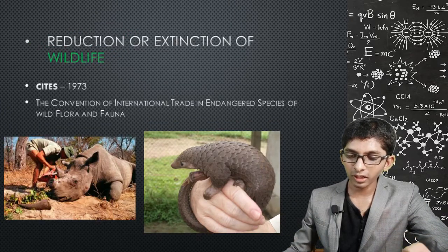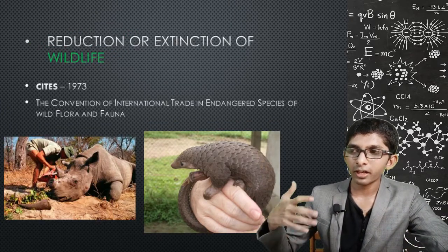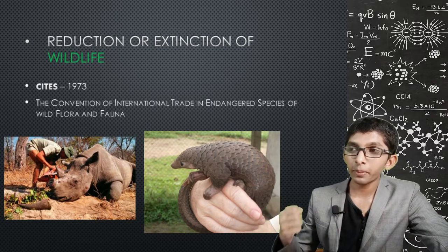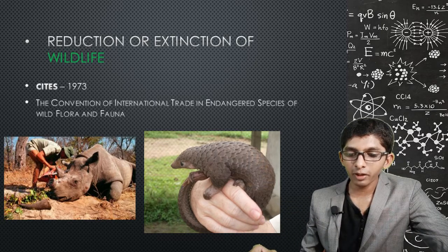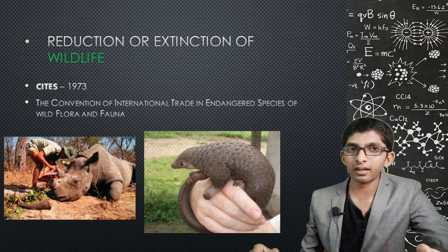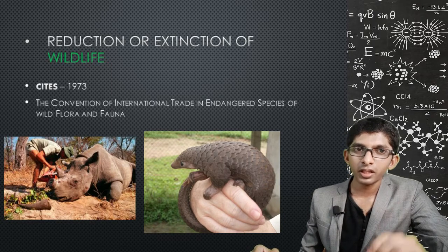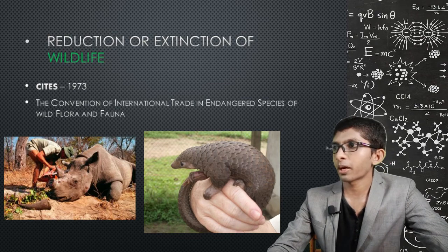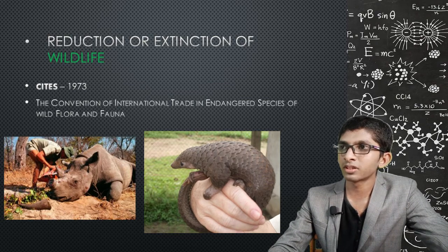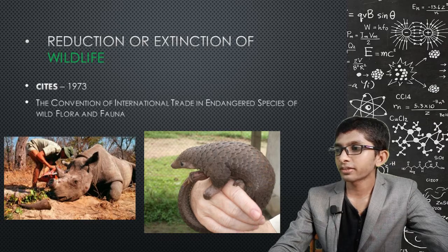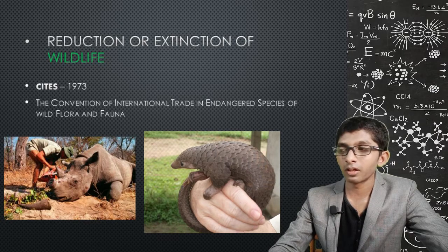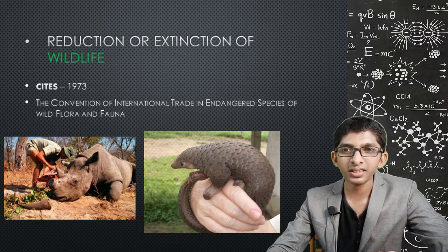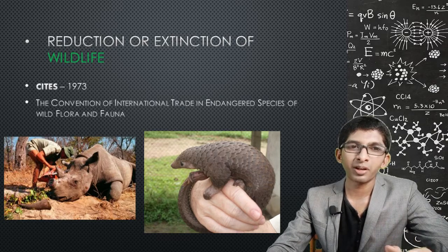Environmental degradation also leads to the destruction of ecosystems and threatens natural resources. It causes the extinction of wildlife — for example, dinosaurs are extinct, and elephants and rhinoceroses in India are endangered. Rhinoceros horns are used in traditional medicine, driving poaching.